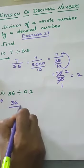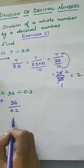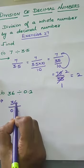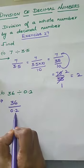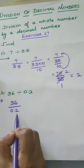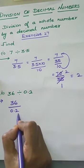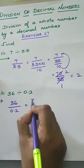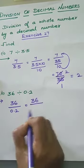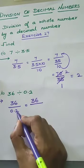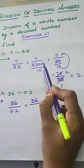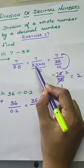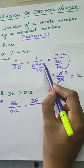Next problem: 36 divided by 0.2. Same approach — we are dividing a whole number by a decimal number. The denominator has only 1 decimal place after the decimal point, so again we choose the number 10. The numerator stays the same value, and we multiply and divide using 10. After the decimal point we have only one place, so we choose the value 10.